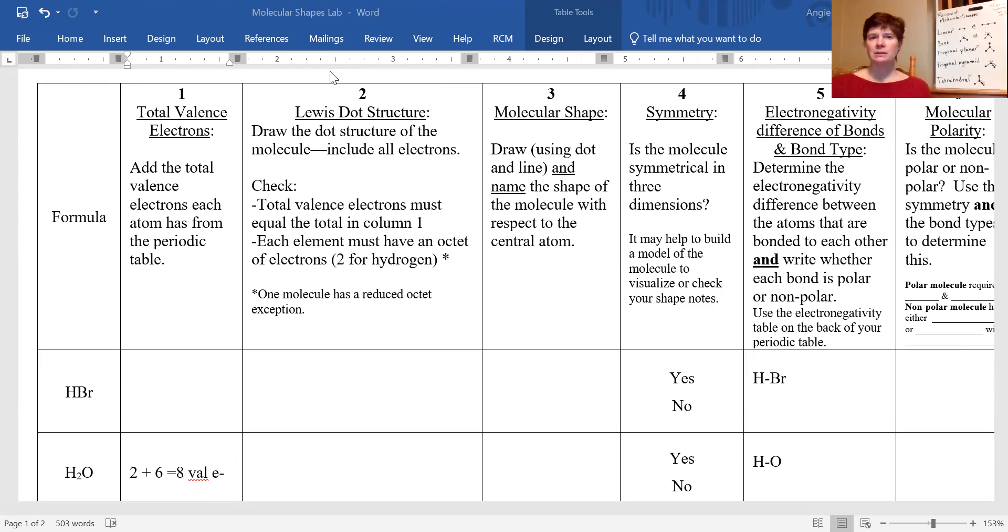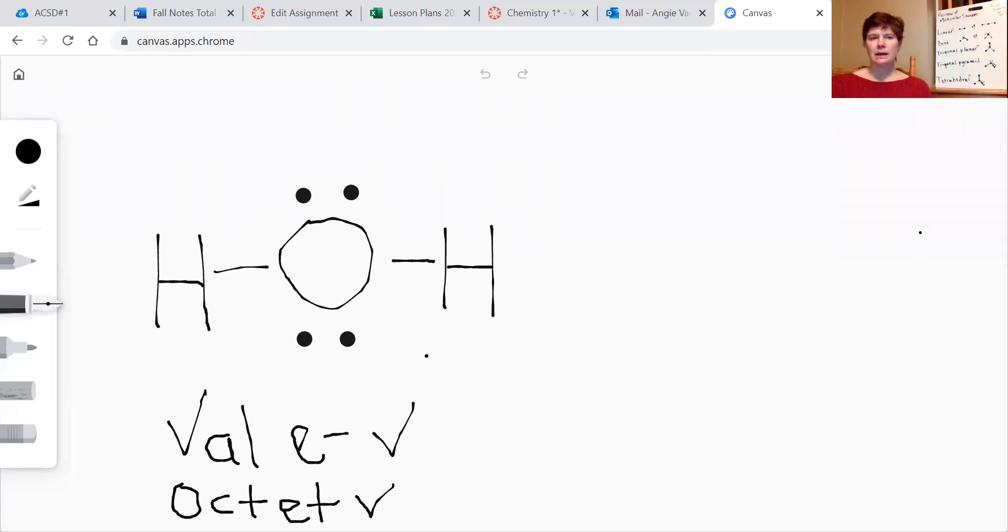Let me change my screen share to the canvas. This is the Lewis dot structure or electron dot structure that we drew for water H2O. Now one of the things to remember is that when we draw Lewis dot structure, that does not give us three-dimensional shape. We're drawing it in two dimensions, and if we look at this, it looks like this is straight across from the hydrogens to the hydrogens, but that is not the case at all.